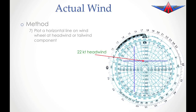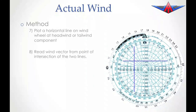So now we draw a horizontal line on the headwind side representing the 22 knots of headwind. Where those two blue lines intersect gives us our actual wind. Our actual wind is 257 degrees magnetic at 37 knots.